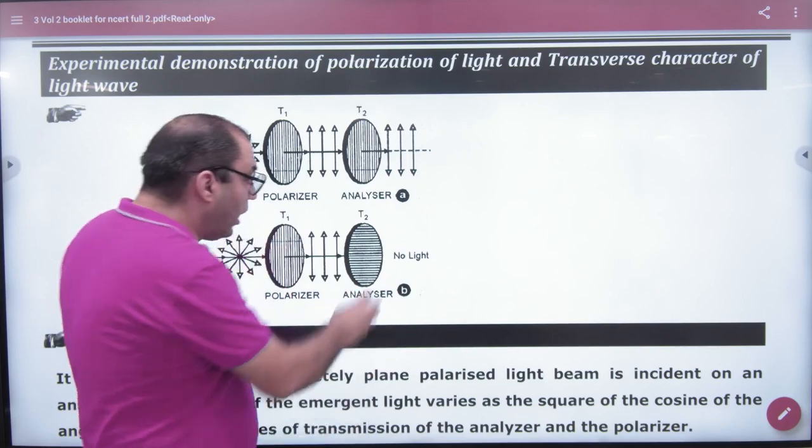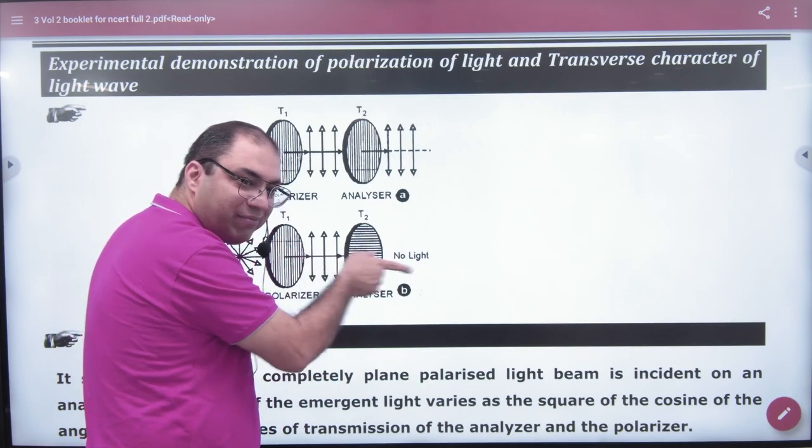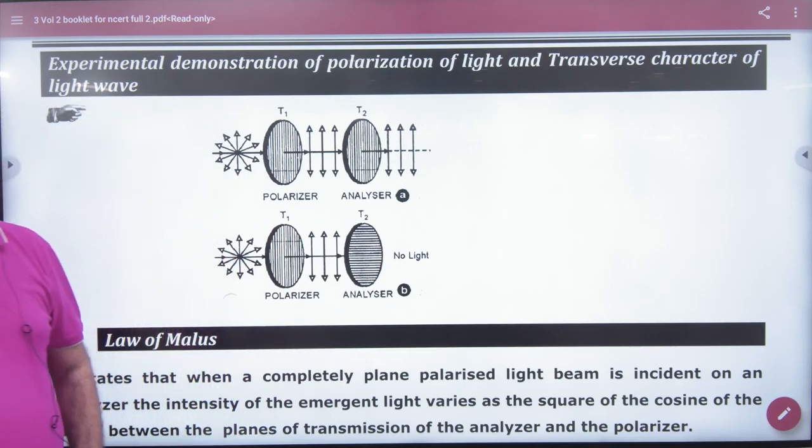But think about that, if light comes out, this vibration is also in this direction, this light will not come out. It means light is polarized. So, you understand how to check if it's polarized or not?